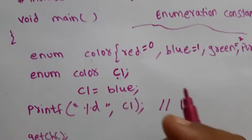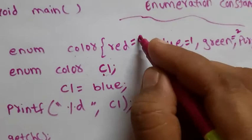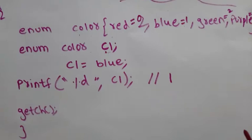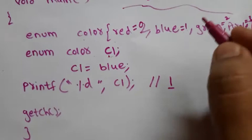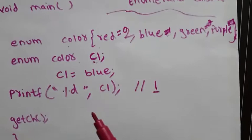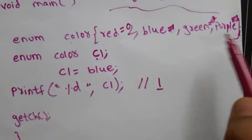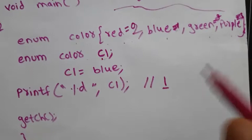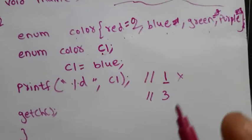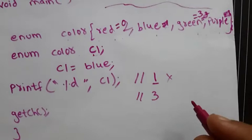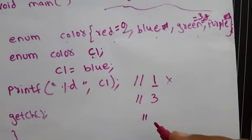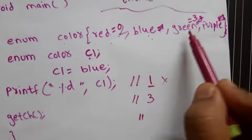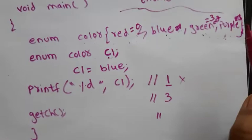These are called enumeration constants, and the compiler assigns their values automatically. But if you don't want red to be 0, you can assign your own value — for example, red = 2. If I print blue now, it will still print 1? No — if red is 2, the next values increment from there: blue = 3, green = 4, purple = 5. So if c1 = purple, it prints 4 in that case.